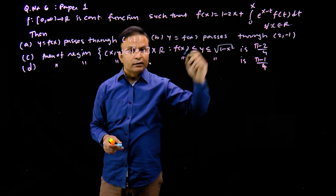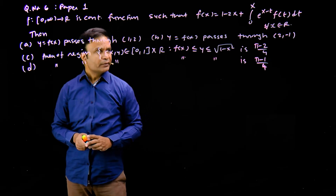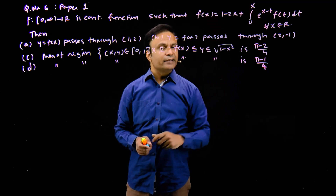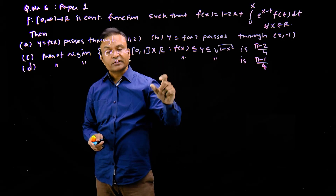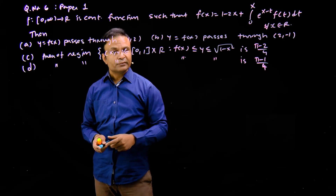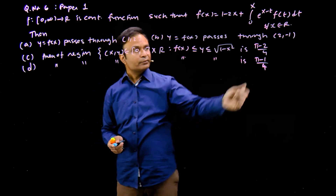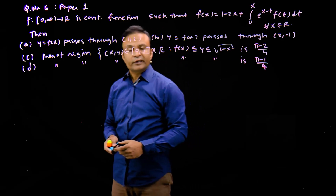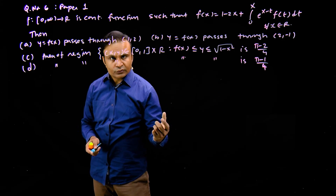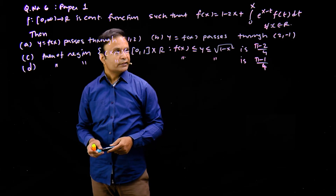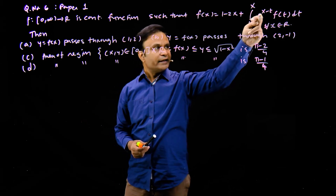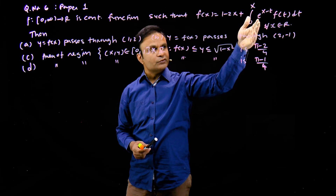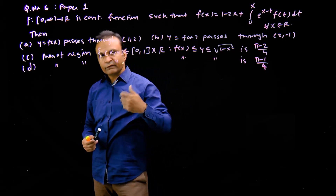This is a differential equation in which the function is inside an integral sign. We have a similar question in revision — when the function is inside an integral sign, we use the Leibniz rule and differentiate. But here we have e^(x-t), so we first separate e^x from the integral and then differentiate.